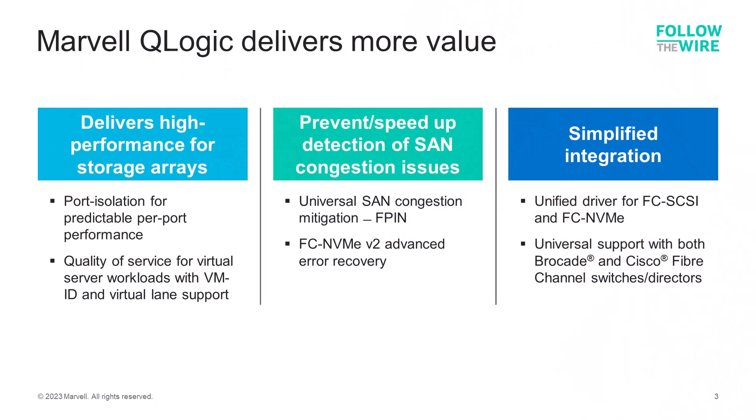QLogic Fiber Channel HBAs deliver high-performance connectivity for both SCSI-based and native NVMe storage arrays, and they can simultaneously connect to the older SCSI arrays and to newer NVMe arrays. Support for fabric performance impact notifications in the QLogic universal SAN congestion mitigation feature helps identify and correct congestion issues in the SAN without administrator intervention. QLogic HBAs also provide simple integration with a unified SCSI and NVMe driver and full feature support for both Brocade and Cisco switches.